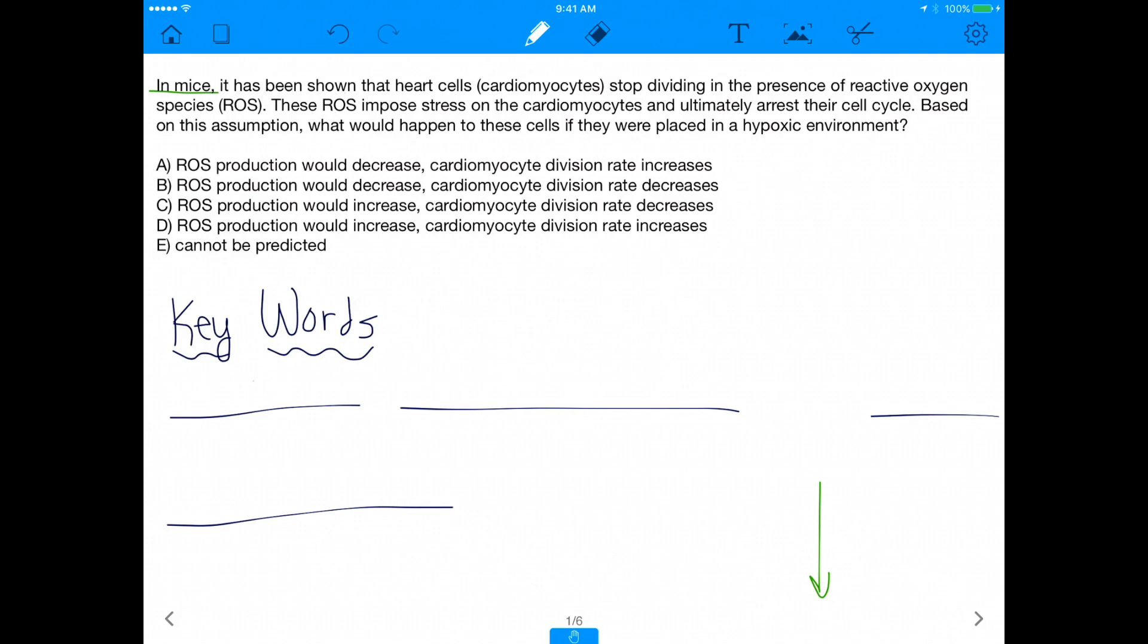It says in mice, it has been shown that heart cells stop dividing in the presence of reactive oxygen species, ROS. These reactive oxygen species impose stress on the cardiomyocytes and ultimately arrest their cell cycle. So based on this assumption, what would happen to these cells, the cardiomyocytes, if they were placed in a hypoxic environment?